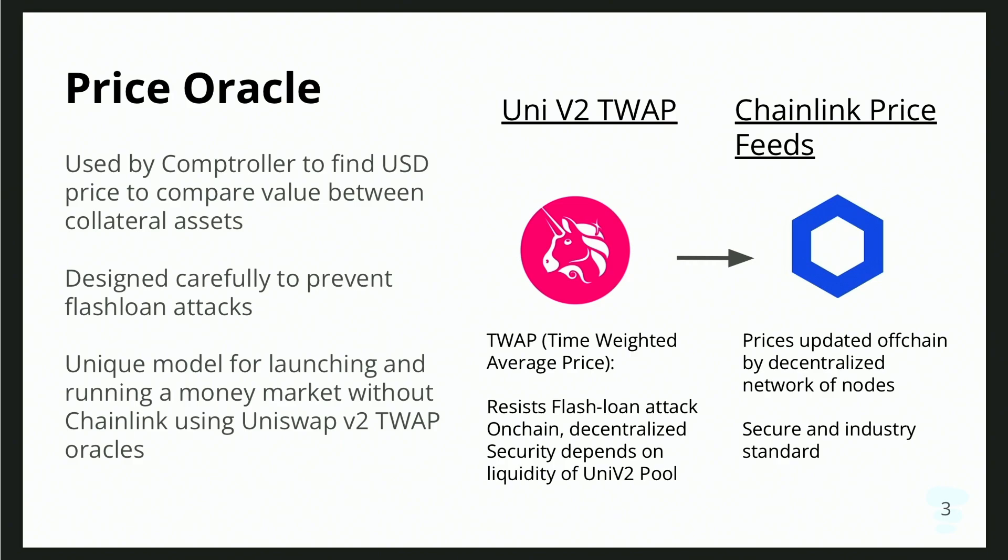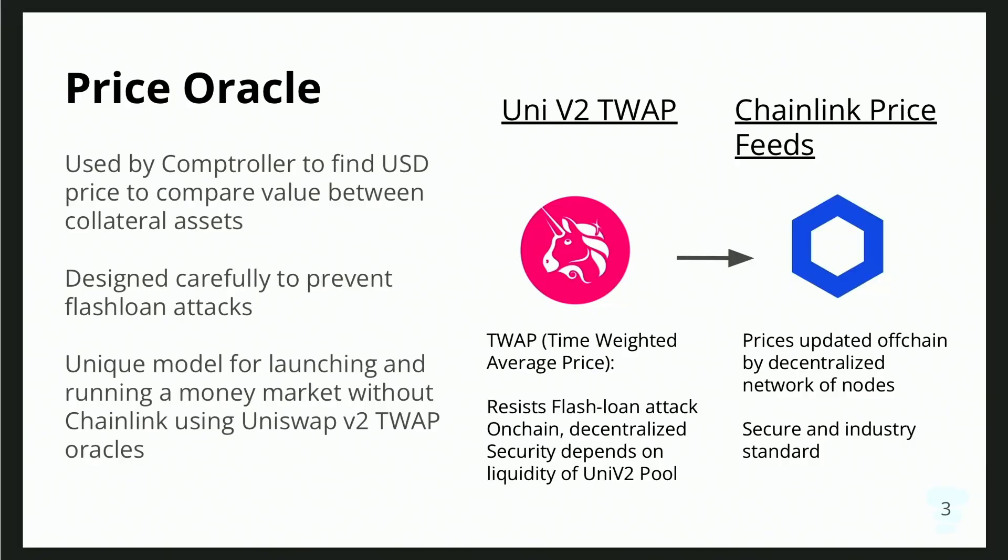A poorly designed oracle makes you very vulnerable to flash loan attacks, where someone can artificially manipulate the price and make your protocol insolvent. Our implementation — we actually wanted to launch with Chainlink, which is an off-chain oracle that uses volume-weighted average price (VWAP) to get the price. We tested it with Chainlink on testnet, but due to timing, the Chainlink oracle wasn't ready for mainnet, so we pivoted to a Uniswap V2 TWAP contract. Unlike Chainlink, the price is determined entirely on-chain, so in a way it's actually more decentralized.